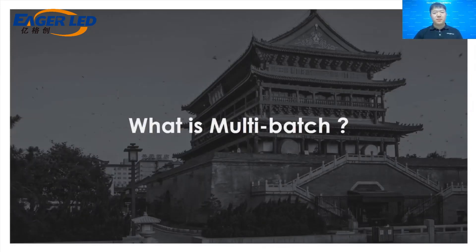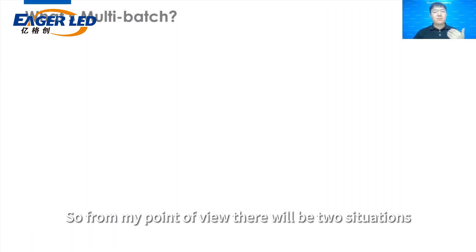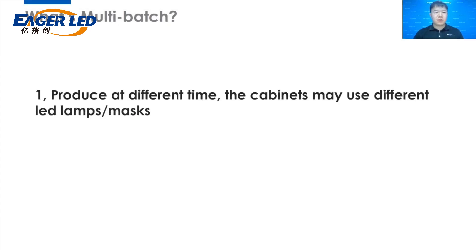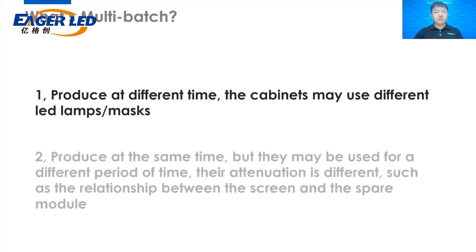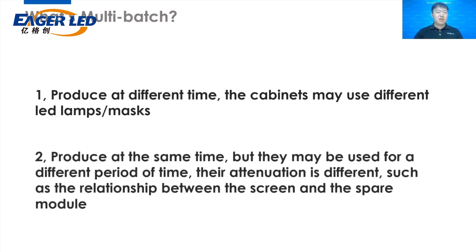What is a multi-batch? From my point of view, there will be two situations. The first is they were produced at different times, so the cabinets may use different LED lamps, and even the color of the masks will be different. The second is they were produced at the same time, but may be used for different periods of time, so their attenuation is different — such as the relationship between the screen and the spare module.